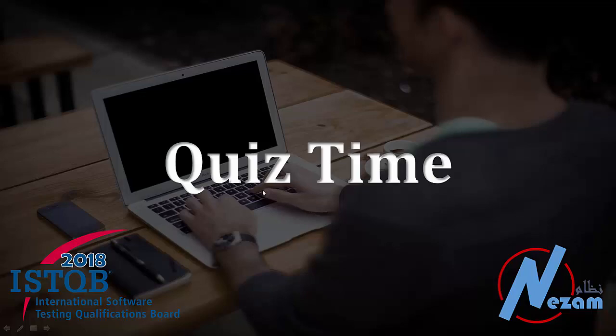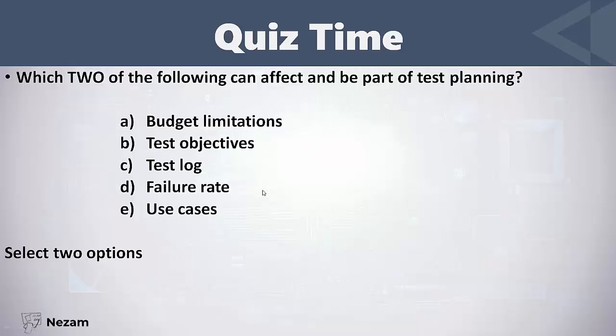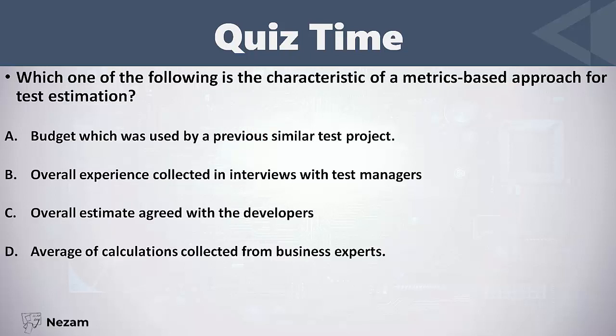Let's now solve some questions on this section. Which two of the following can affect and be part of test planning? The options are: budget limitations, test objectives, test log, failure rates, use cases. Select two options. The budget is a part of test planning and the test objectives are part of test planning, but test logs and failure rates may be used in a test summary report, and use cases are not part of test planning.